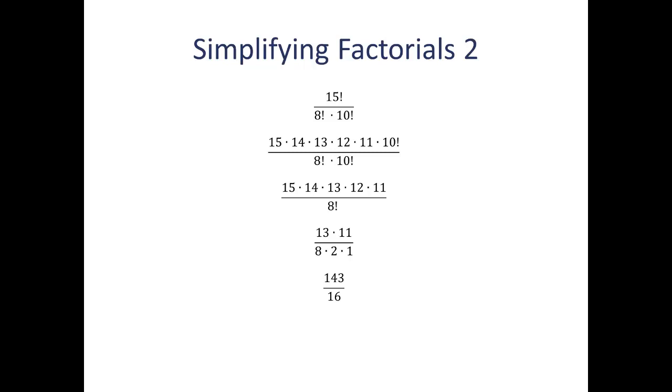And that's going to leave me with 13 times 11 over 8 times 2 times 1. And at this point, I can't cancel anything else out. So I'm just going to multiply: 13 times 11 is 143, and 8 times 2 times 1 is 16. And that's going to give me our final answer, 143 sixteenths.